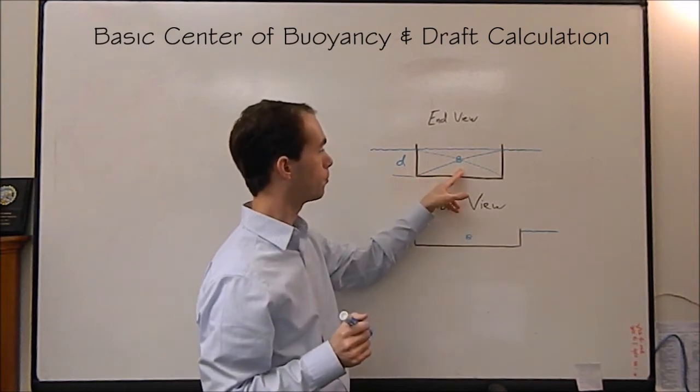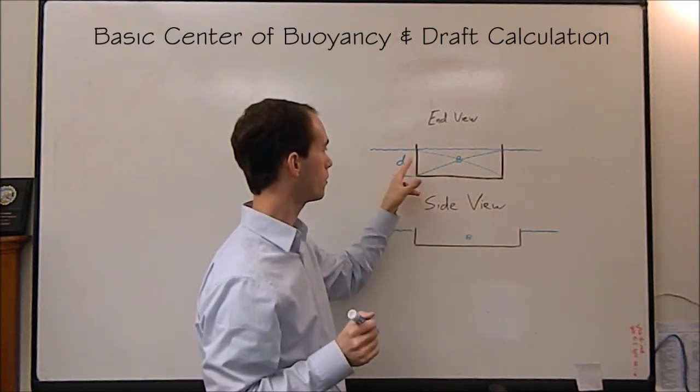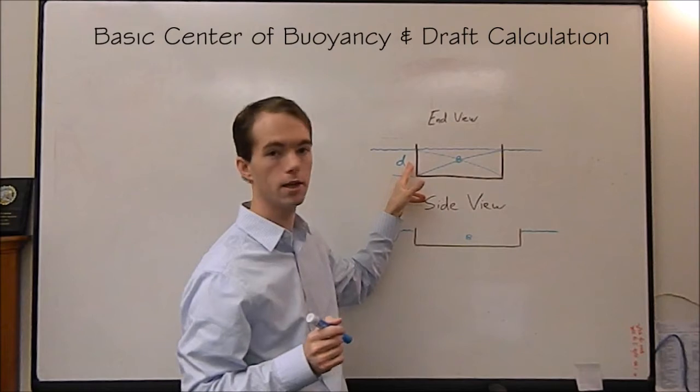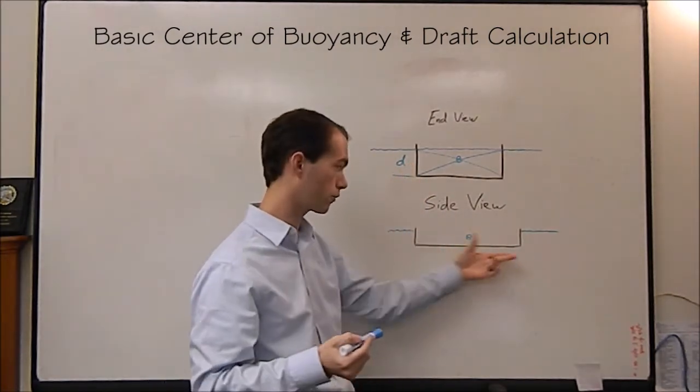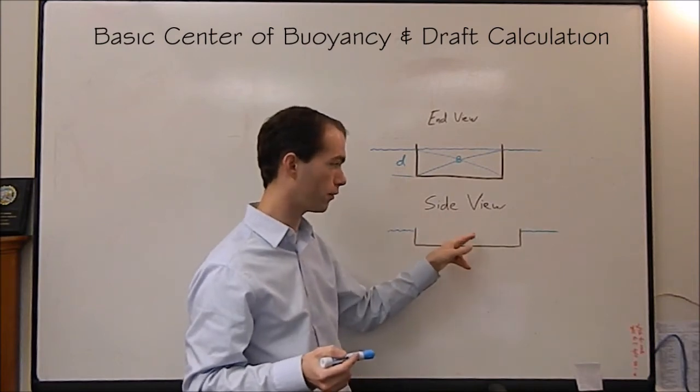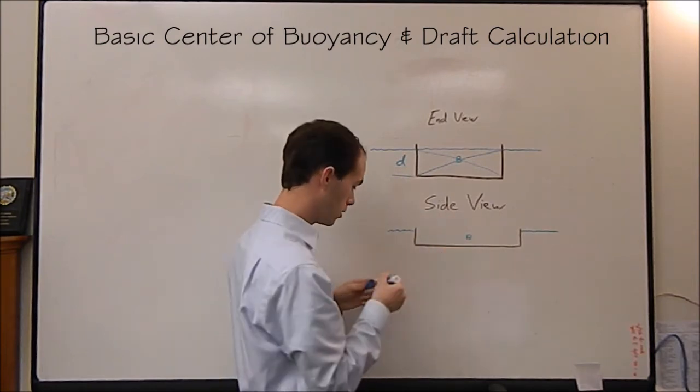And so with a prism, luckily, your center of buoyancy is going to be exactly half your draft, assuming you have a totally symmetric boat. If you look at it from the side, if it looks like this, then center of buoyancy is also going to be in the center right here too. So you're good.